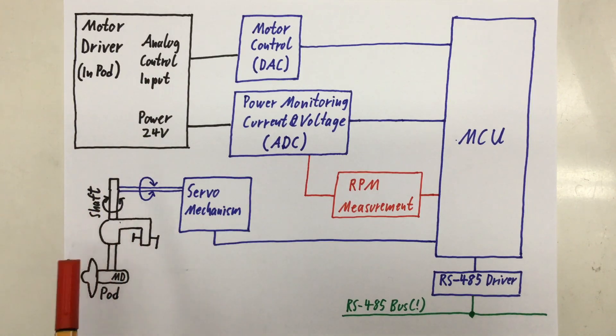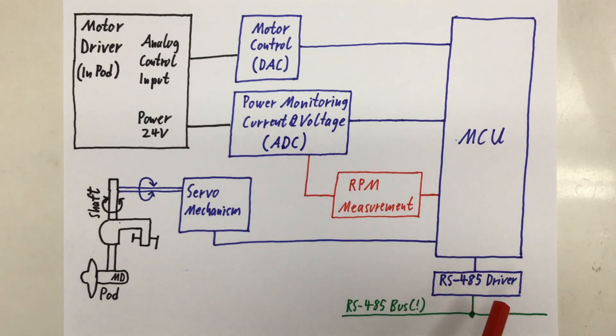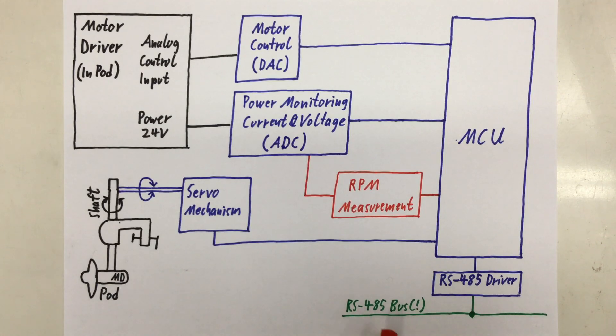But we also need some steering. That is a way to actually turn the shaft of our outboard. And that will be done by a servo mechanism that is also digitally controlled by our MCU. How that servo mechanism will actually look like from a mechanical and from an electronical standpoint is still open. I first have to do some real world measurements how much torque is actually needed to turn the shaft.